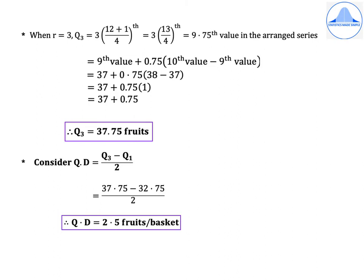When R = 3, Q3 = 3 × (12 + 1) / 4 = 39/4 = 9.75th value in the arranged series, which equals 9th value + 0.75 × (10th value − 9th value) = 37 + 0.75 × (38 − 37) = 37 + 0.75. Therefore Q3 = 37.75 fruits.